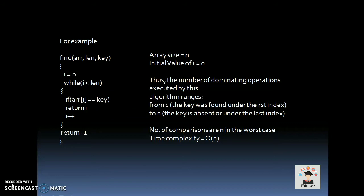Here we take one example. Here is a find function which takes an argument like array name, length of array, and the key which we have to find. A while loop checks if i is less than the length of the array. Inside, an if statement checks if array[i] equals the key. If equal, it returns i; otherwise, it returns minus one. The number of dominating operations executed ranges from one to n. Therefore, the number of comparisons are n in the worst case, and the time complexity becomes O(n).